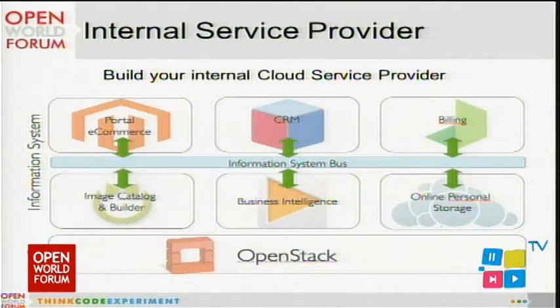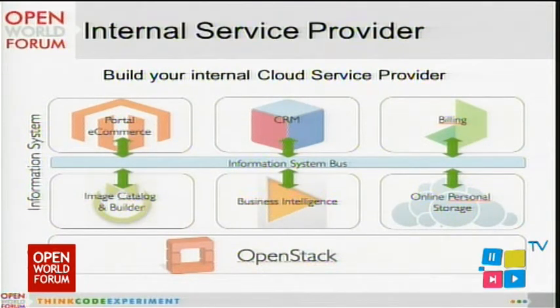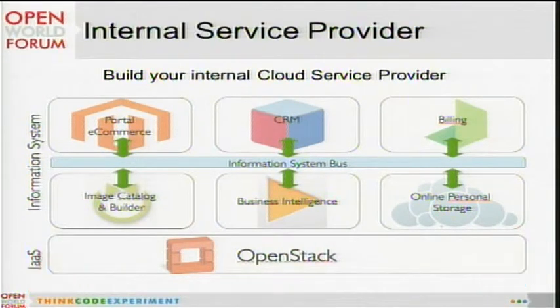Another thing we are seeing is people that want to offer the same thing that Amazon does. Amazon is offering on-demand resources to anyone with delivery of systems in a few seconds. This is provided using an infrastructure-as-a-service brick, OpenStack, but it needs to be integrated with quite a few other systems that will handle CRM, the customer portal, the services catalog, billing, and image catalog.